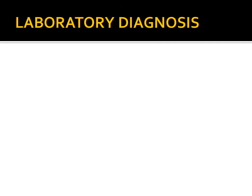For diagnosis, specimens depend on the site of infection. For respiratory infection, a sputum sample is taken; for lymphadenitis, a lymph node aspirate is collected. Pus, exudates, and biopsies can also be used depending on the symptoms and site of disease.